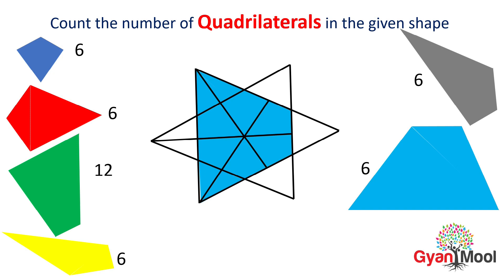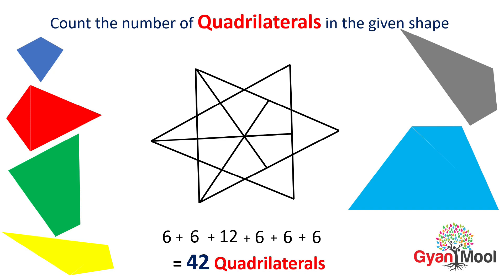Now we get all the quadrilaterals. To get the number of total quadrilaterals we will add all these quadrilaterals. So finally we get our answer, 42 quadrilaterals.